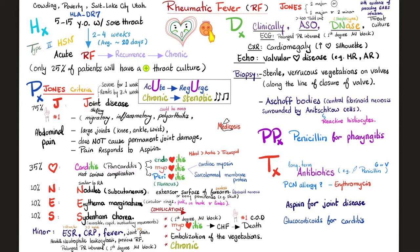Acute rheumatic fever happens to young people 5 to 15 years old, especially if living in a crowded area or in poverty. Two to four weeks later, a type 2 hypersensitivity reaction causes acute rheumatic fever. Recurrence again and again can make it chronic. Remember that acute causes a regurgitation murmur, but chronic is stenotic.